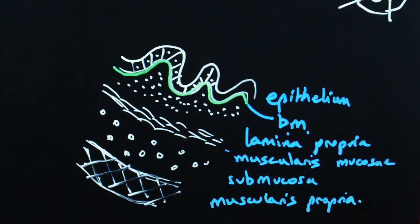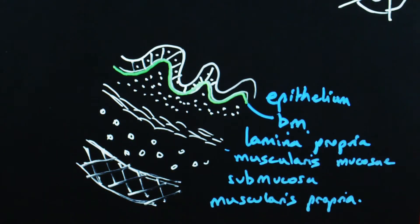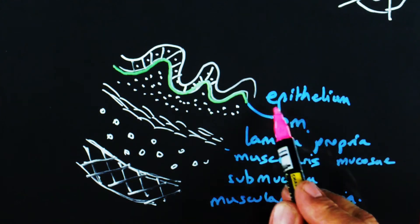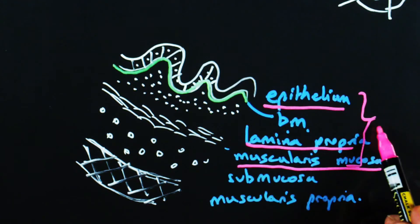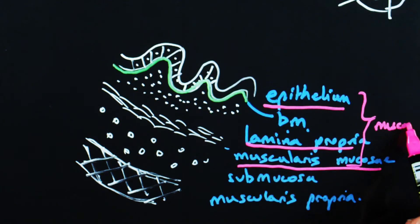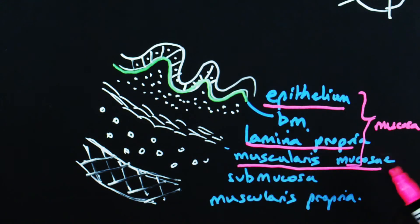And we can finally annotate the diagram by saying that the epithelium, together with lamina propria and muscularis mucosae, constitute the mucosa. So we have then three basic layers, that is, the mucosa, the submucosa, and muscularis propria.